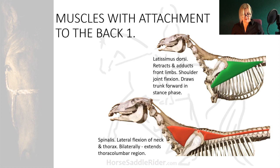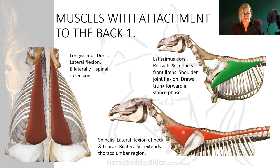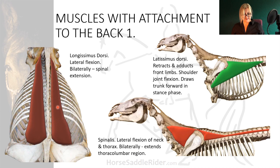Longissimus dorsi is a substantially thick muscle when sufficiently developed for saddle placement. It is a lateral flexor of the spine and when recruited bilaterally can extend the spine. It must be carefully developed so as not to be fixed in hyperextension — this usually means plenty of work without a rider and saddle to allow proper development; otherwise the saddle can end up placed almost directly onto a bony surface.